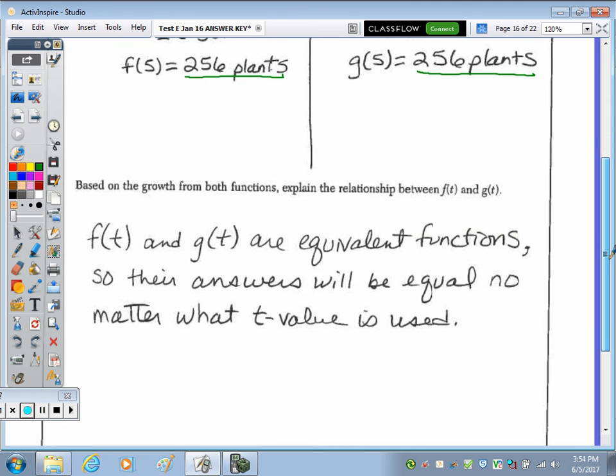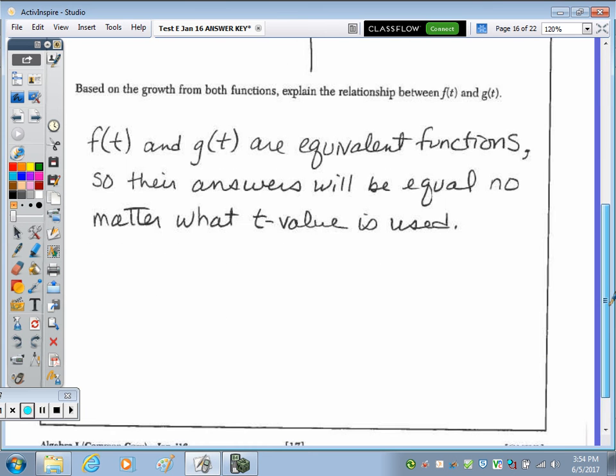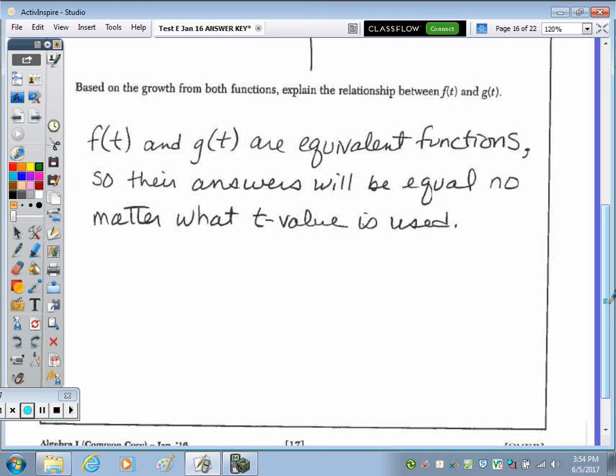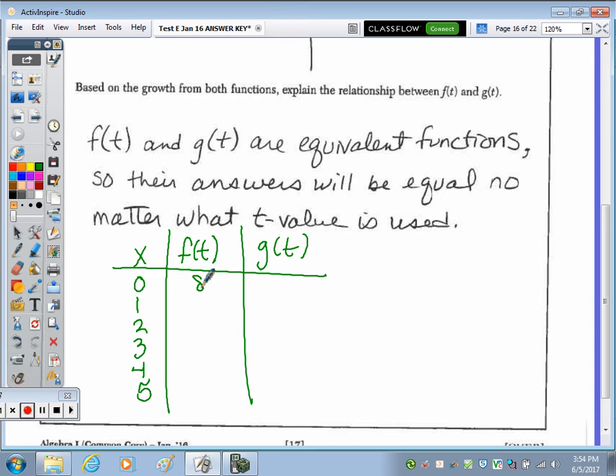Based on the growth from both functions, explain the relationship between f(T) and g(T). f(T) and g(T) are equivalent. And if you actually type this into your calculator, the two functions, you will notice, I'll look at the values from 0 to 5. They have the same number of dandelions for week 0. For week 1, they both end up with 16. Week 2, 32. Week 3, 64. Week 4, 128. And week 5, the 256. So they're not only will yield the same dandelions for week 5, but no matter what week, you'll end up with f(T) equals g(T).